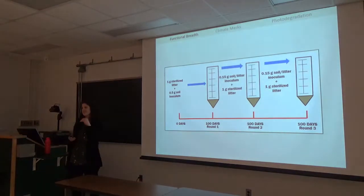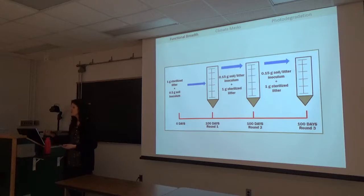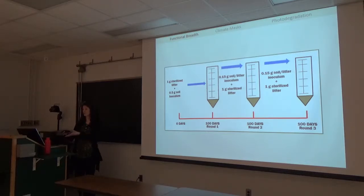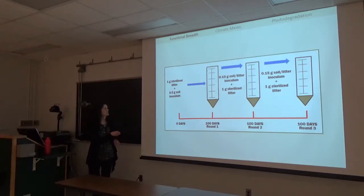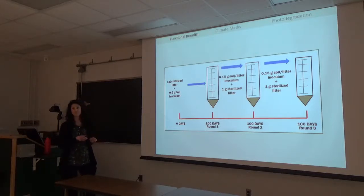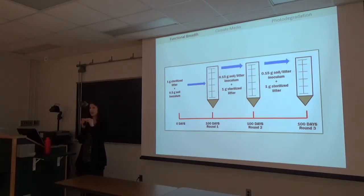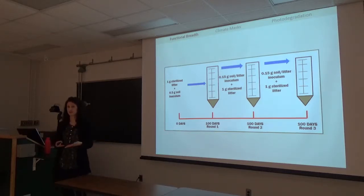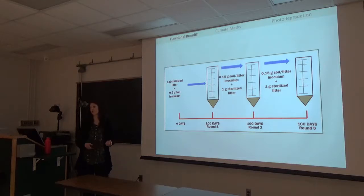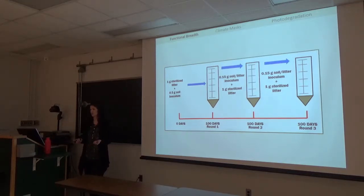To see whether communities could increase in function, I ran multiple 100-day rounds on the same litter type. I sterilized my litter to ensure the microbial community was sourced from the soil environment, not from existing microbes already on the litter. At the end of 100 days, the soil-litter inoculum was re-inoculated onto fresh litter of the same type for a second and then a third 100-day round. So communities exposed to rhododendron in round one were exposed to it again in rounds two and three, and the same for the grass litter.